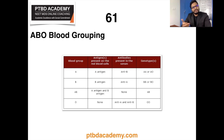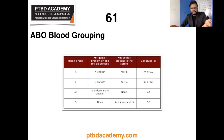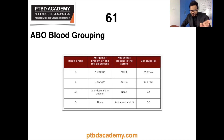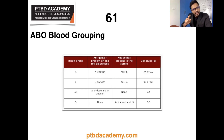Based on the ABO blood group system, we have blood group A, blood group B, AB, and O, from which we can determine corresponding antigens, antibodies, and genotypes.